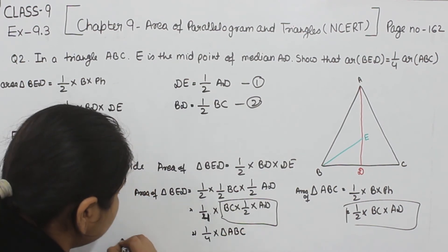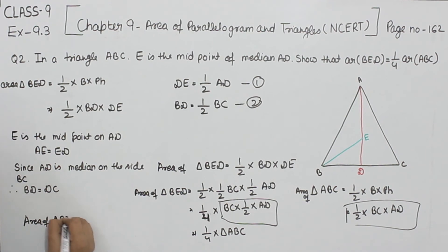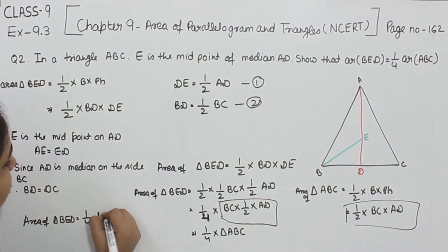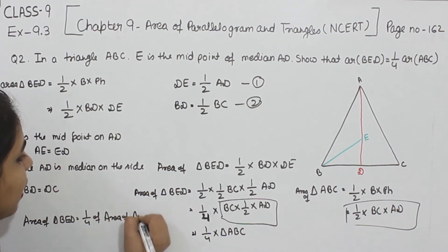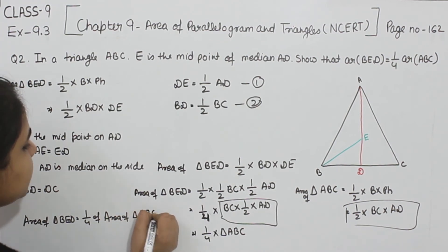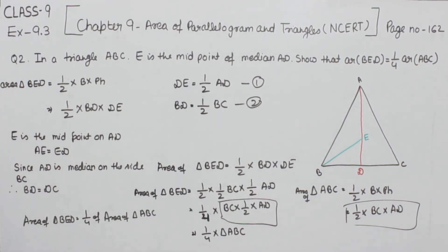So area of triangle BED is equal to one-fourth of area of triangle ABC — which is exactly what we had to prove. We have successfully proved this. In the next video, we are going to start with question number three.